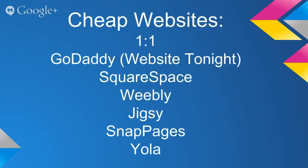Where can you get a cheap website? You can go to GoDaddy and use Website Tonight pretty cheap. There's also Squarespace, Weebly, Jigzy, SnapPages, and Yola — a couple of these are recommended by Mashable, which is a reputable online publication. If you don't have any other way to get something done and you're not a web designer, you can at least go to GoDaddy, or go to Squarespace. Check out the fees, check out what they offer, and decide what's best for you. Any of those will work for a small website with content.